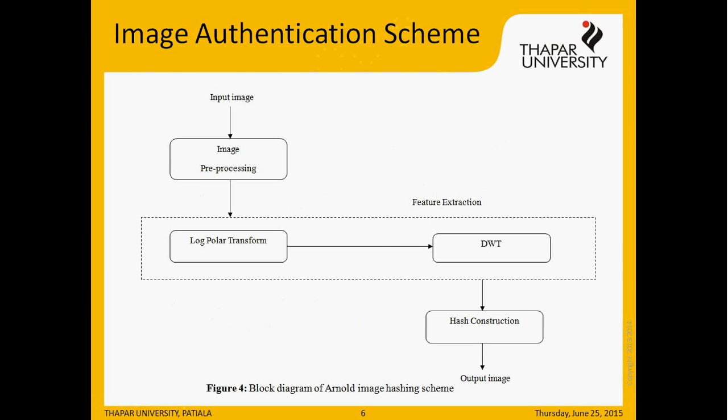Image authentication algorithm: This image authentication scheme consists of three parts. First, pre-processing — the image is rotated about 45 degrees and an averaging filter is applied to it. Second, feature extraction — the log-polar transform is applied to the output image of the pre-processing step, followed by DWT transformation, and XO is the result of four transformations. Third, hash construction — a hash matrix is constructed using Arnold transformation applied to the output image of the previous step.